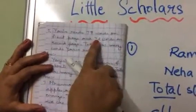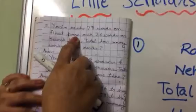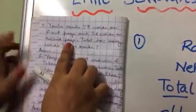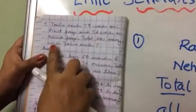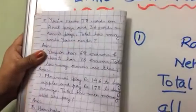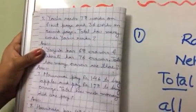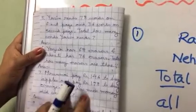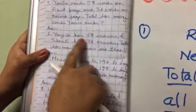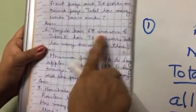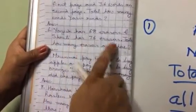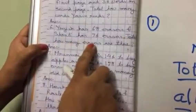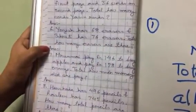Yasin reads seventy-eight words on first page. Thieke. Thirty-six words on second page. Total how many words Yasin read? So simple. Toh total means hamko total batana hai ki Yasin ne sab mila kar kitnay words read kye. Yagesh has sixty-eight erasers. Shruti has seventy-six erasers. Total how many erasers are there? Alright. Wonderful.